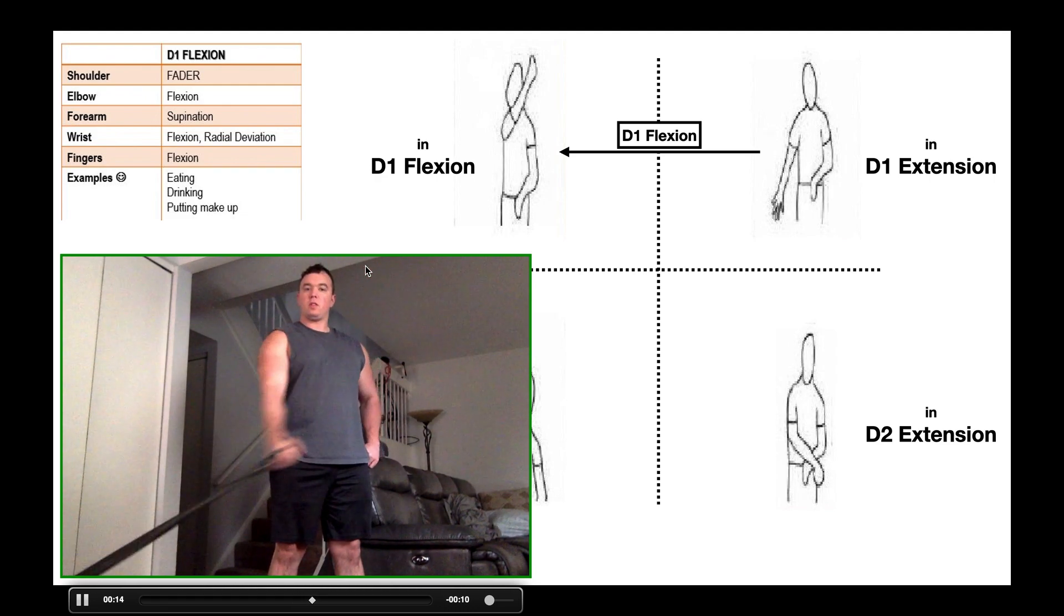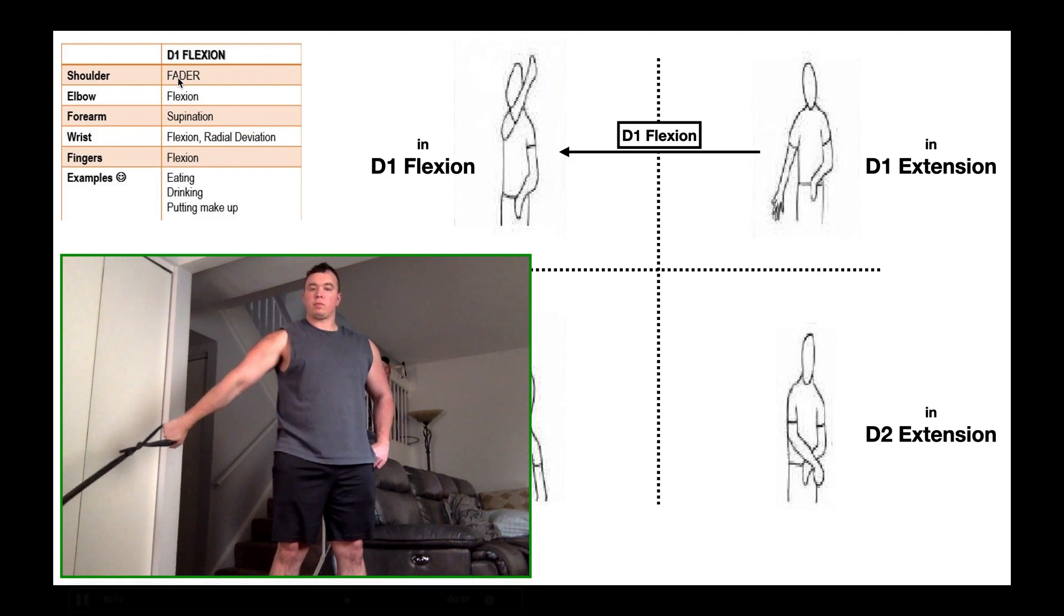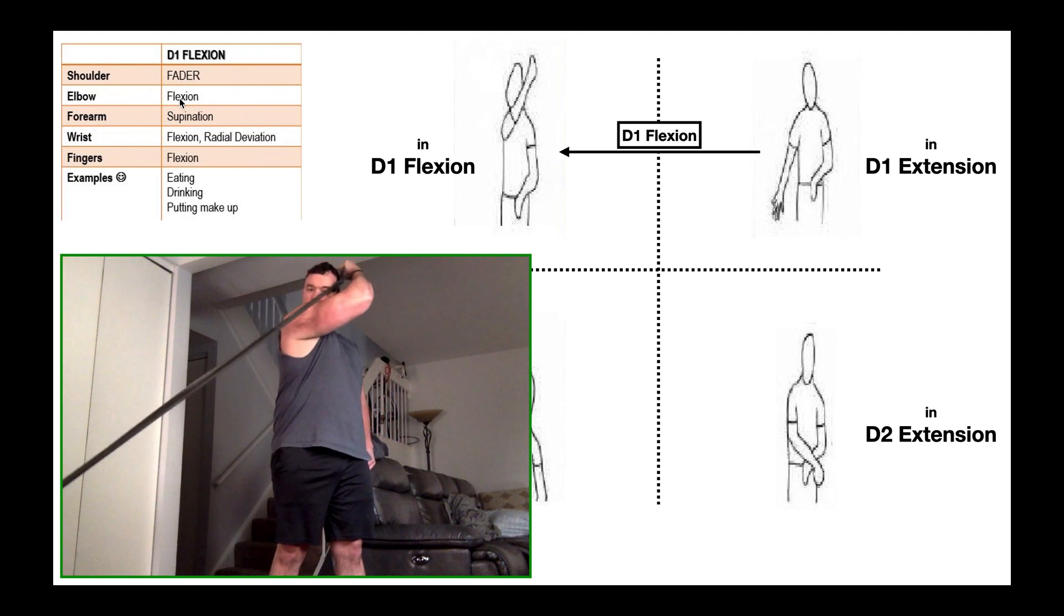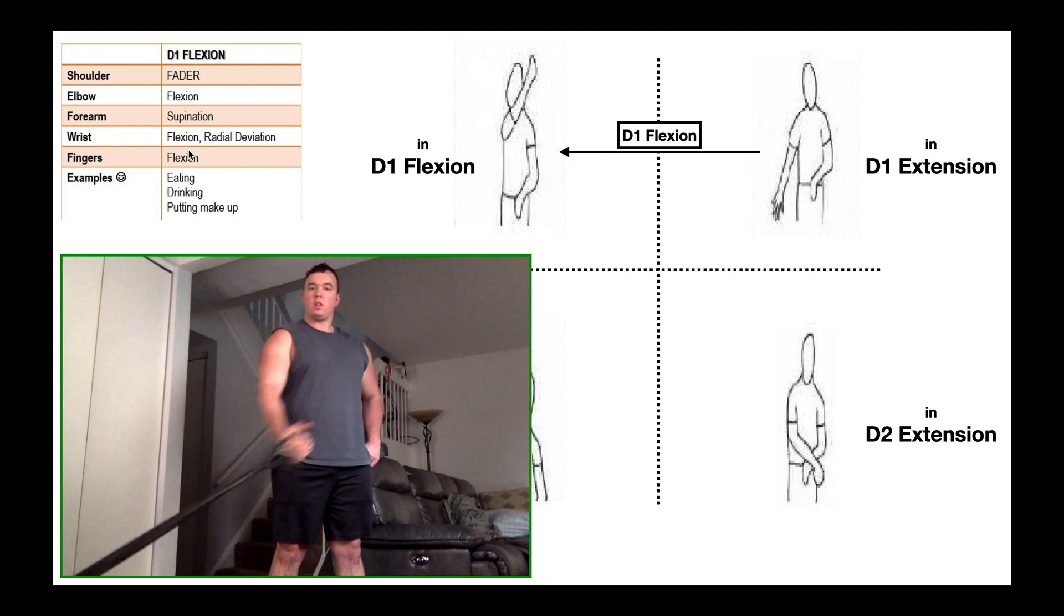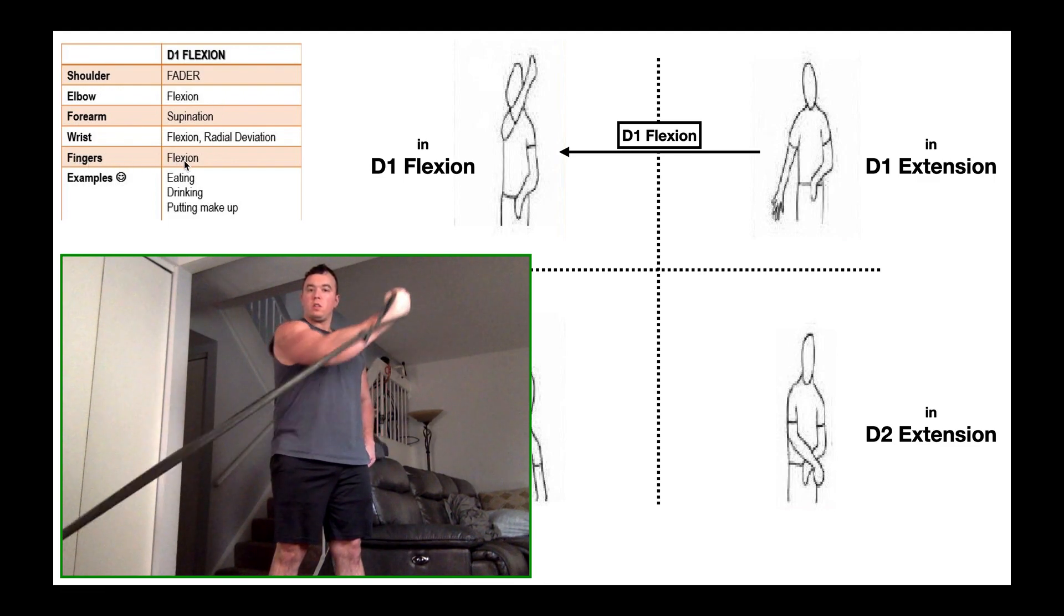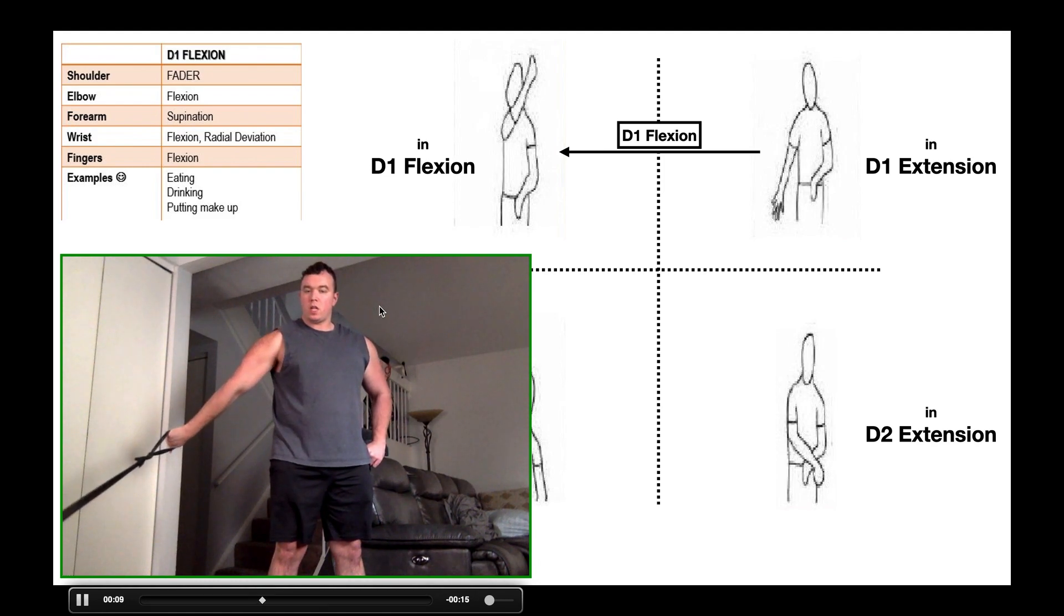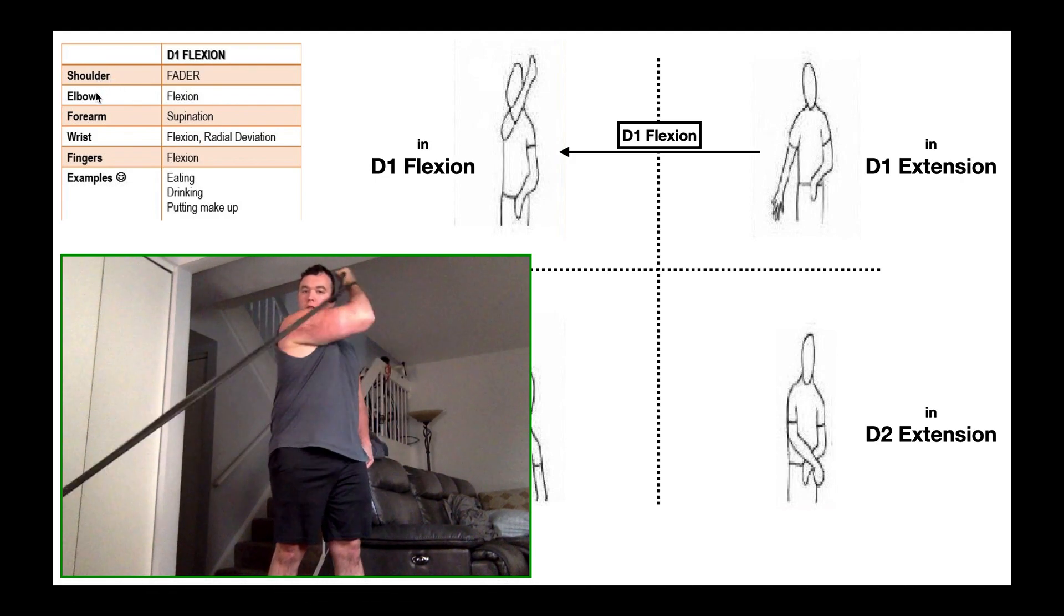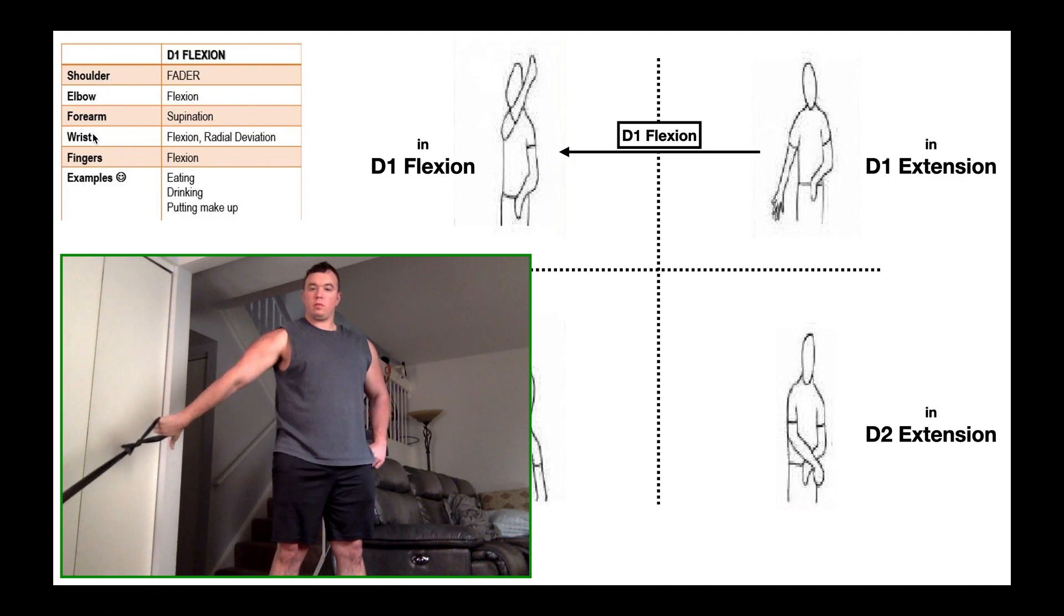Now when you do D1 flexion, you're getting shoulder flexion of course, abduction and external rotation all at the shoulder as you go up. The elbow also flexes as you can see, and the forearm should also supinate. The wrist is also going to flex and radially deviate, and the fingers are also going to flex. Now when you're doing this holding anything, whether it's a weight or a thera band, you're not going to see the finger flexion because you have to be able to grasp whatever the object is. But the important things that you really want to see are those movements at the shoulder, elbow, forearm, and to some extent the wrist. So this would be resisted D1 flexion.